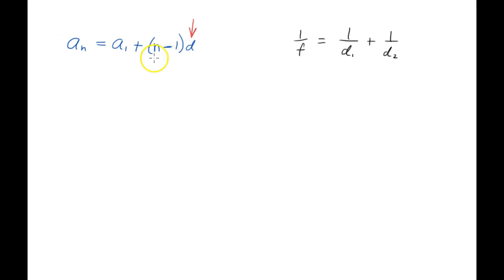The first thing we want to do is get d by itself, or get everything that's multiplied by d by itself. So we'll first subtract a sub 1 from each side and that will give us a sub n minus a sub 1 equals the quantity n minus 1 times d.